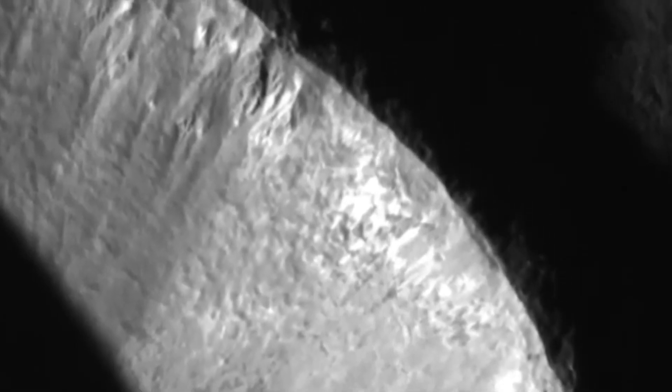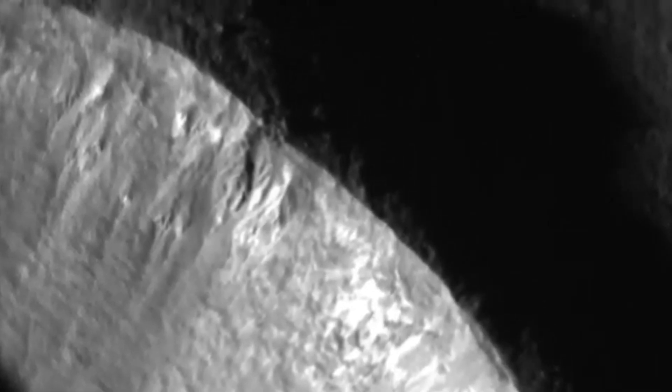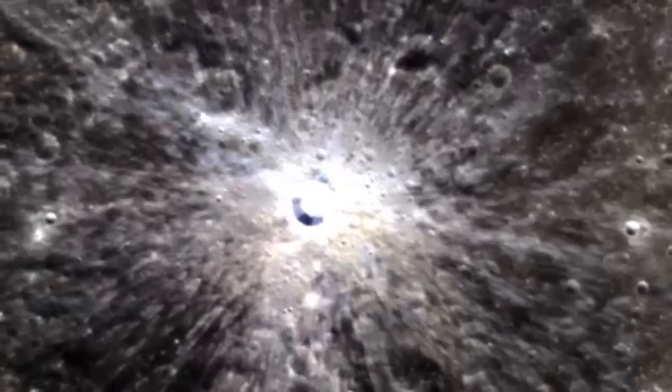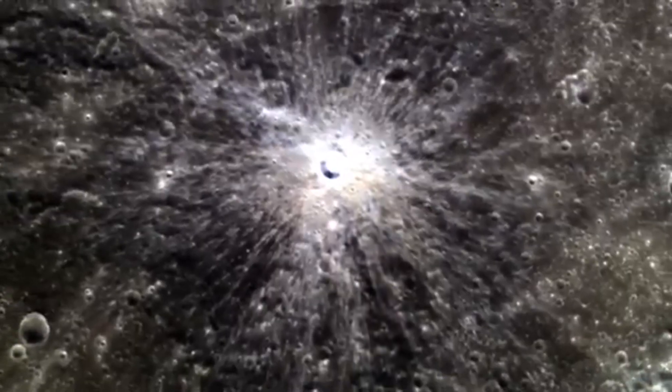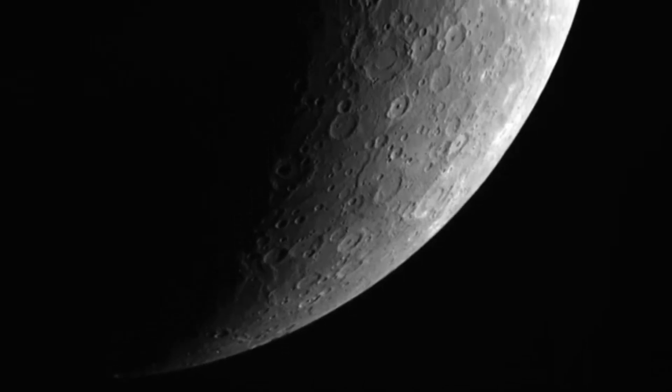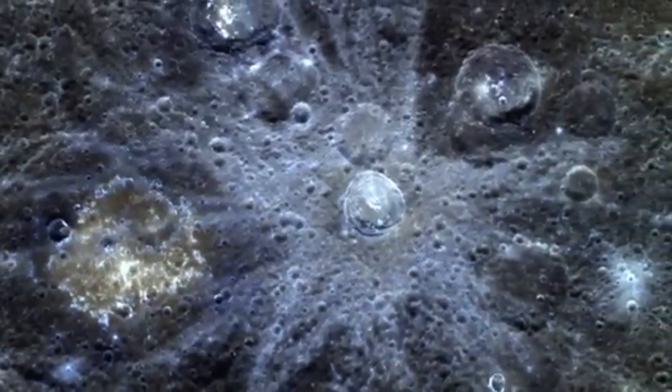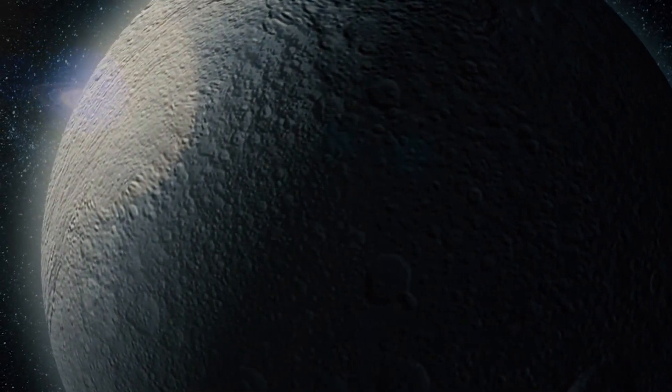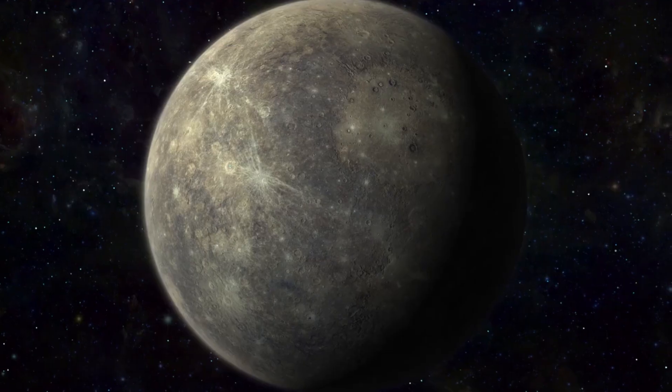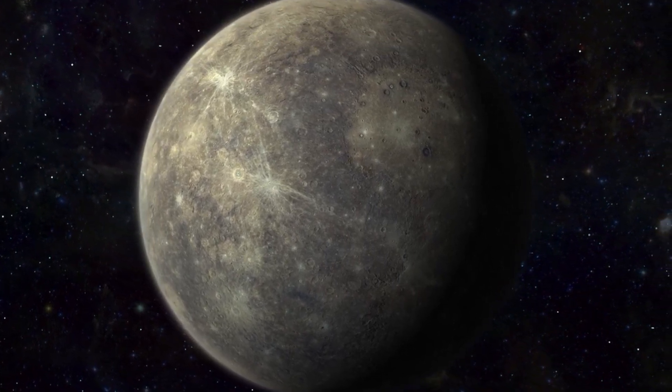But why does Mercury spin so slowly? Scientists believe it's a result of tidal forces. Over billions of years, the sun's gravity has gradually slowed Mercury's rotation. However, Mercury hasn't become fully tidally locked like the Moon. Instead, it's in a three-to-two spin-orbit resonance, meaning it rotates three times for every two orbits around the sun.